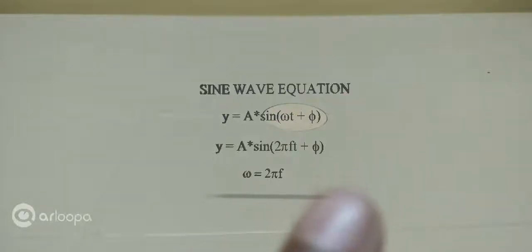And phi is the phase, which specifies where in its cycle the oscillation is at. If phi is zero, there is no phase difference, but if phi is positive or negative, there is going to be a positive or a negative phase difference.